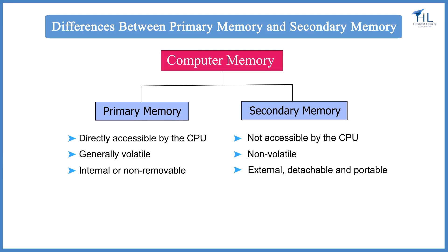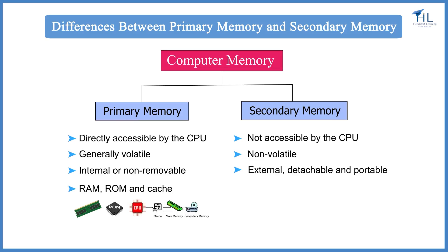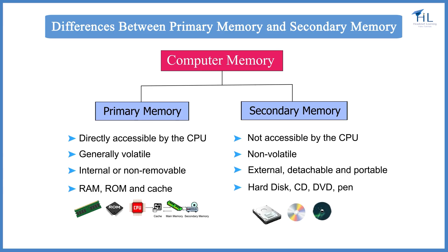Examples of primary memory are RAM, ROM, and cache. Examples of secondary memory are hard disk, CD, DVD, pen drive, etc.